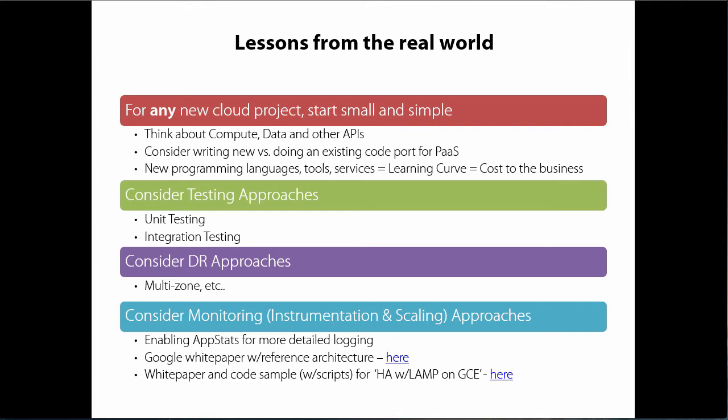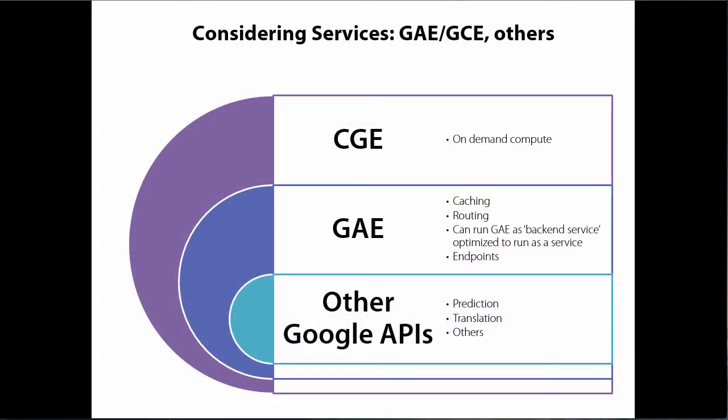There are a couple of white papers I referenced around scaling — specifically scaling on the LAMP stack on GCE — and a reference architecture. I'll really be looking forward to more information from Google on best practices around scaling, which is super important in the real world. Pulling it all together: moving from evaluating and prototyping to a first real-world project, one of the first considerations is understanding which services or combination of services you're going to go with.